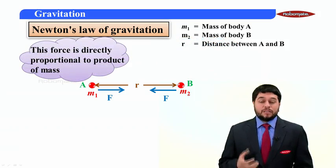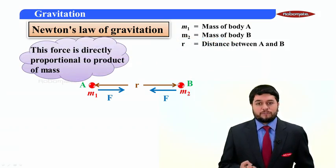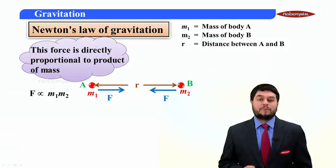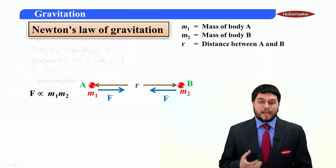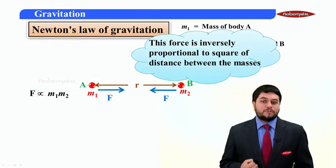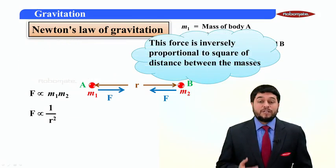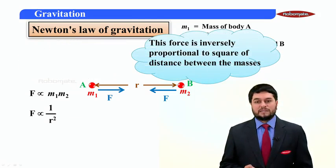Now, according to Newton, this gravitational force of attraction is directly proportional to the product of the masses m1, m2. And this gravitational force is also inversely proportional to the square of the distance between these two masses.